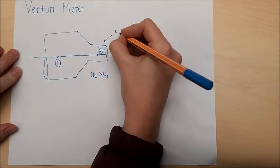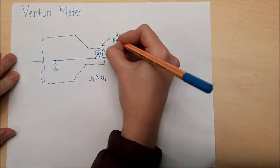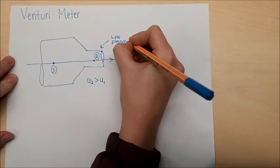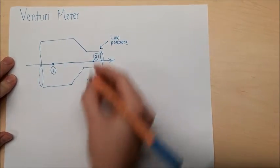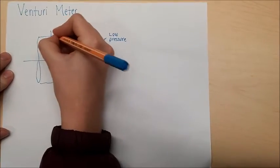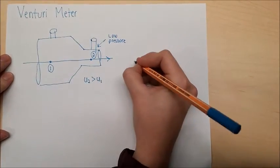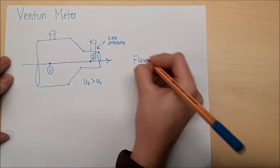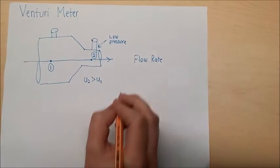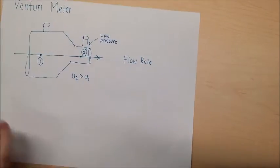What may not be obvious is that point two will have a lower pressure than point one. This can be calculated using Bernoulli's equation. Even if velocity is unknown, by placing pressure sensors on both ends of the pipe, the venturi meter is able to determine the flow rate. Now for some examples of dynamic pressure.